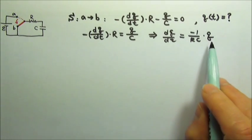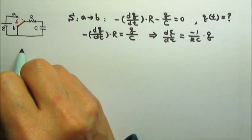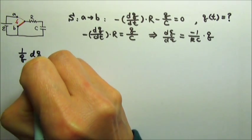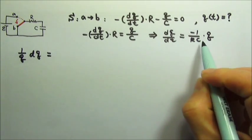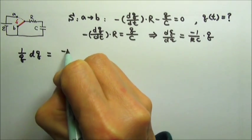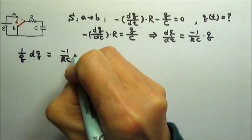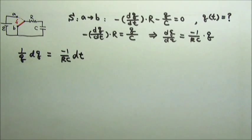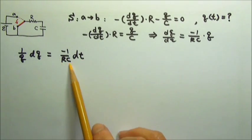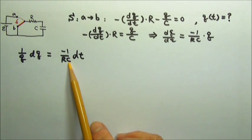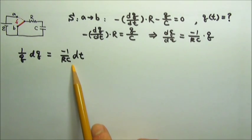Now we can move q to this side, giving us 1 over q dq, and we keep the negative 1 over rc with the dt when we move it to that side. I like to keep the negative 1 over rc with the time because in the end we're going to get e to the negative t over rc, so this is convenient.